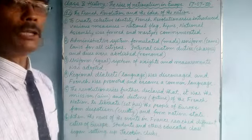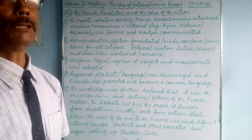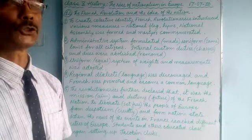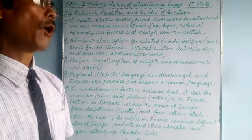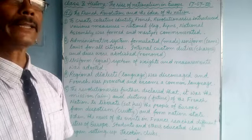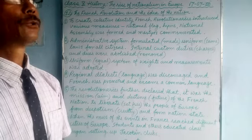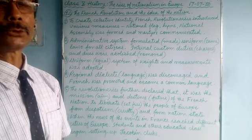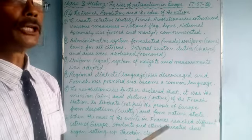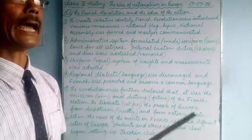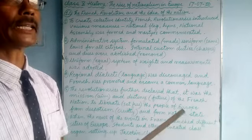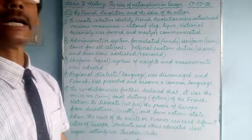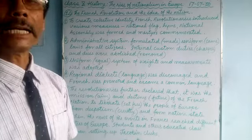Despotism means cruelty. The kings were very cruel, and the nobilities and ministers were yes-men of the kings and were often even more cruel. The mission of the revolutionaries was to liberate the people from this cruelty of the king, ministers, nobility, and clergy, and to create a nation-state where people could live freely.